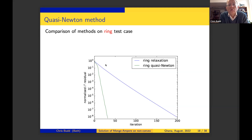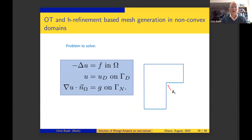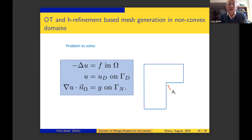The title of this talk is moving meshes for non-convex domains, and I've spoken about moving meshes — now what about non-convex domains? I was told when I started thinking about this that it could not be done, because you can't solve the Monge-Ampère equation in a non-convex domain as you get singularities. But after trying it, we realized that didn't matter, and I'll explain why.